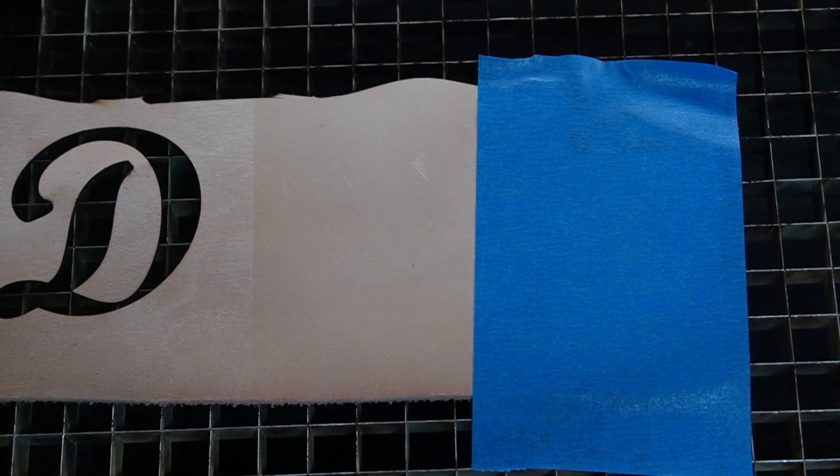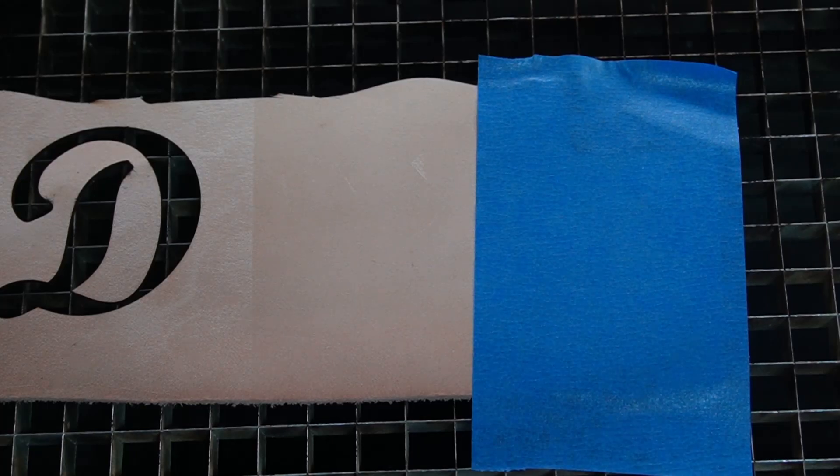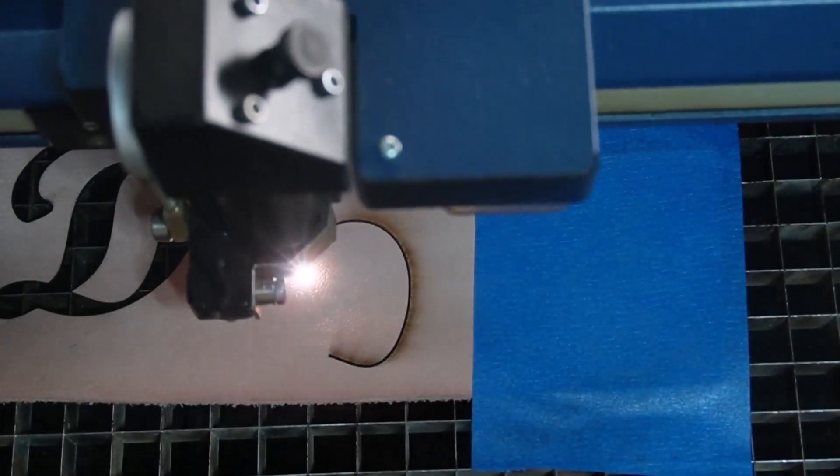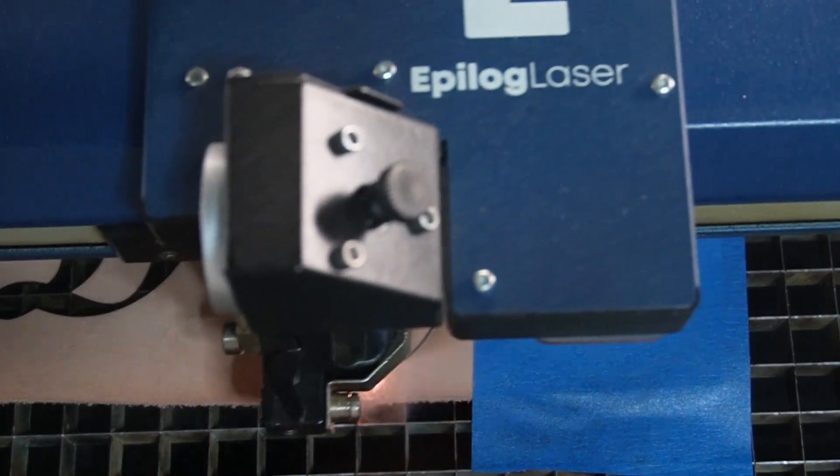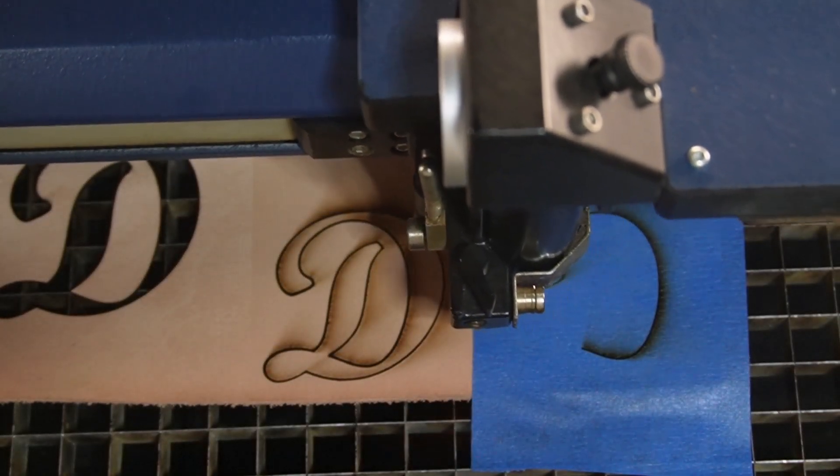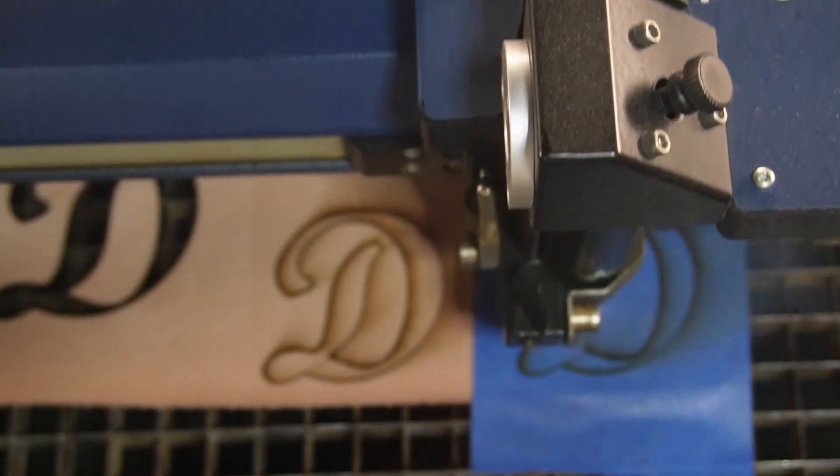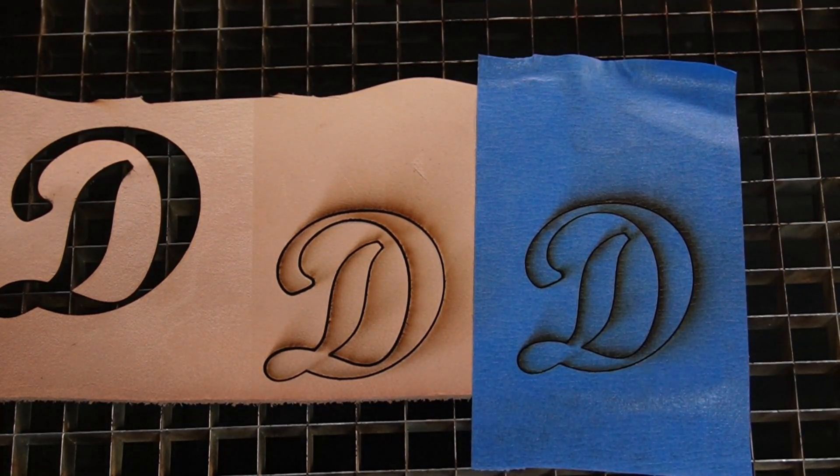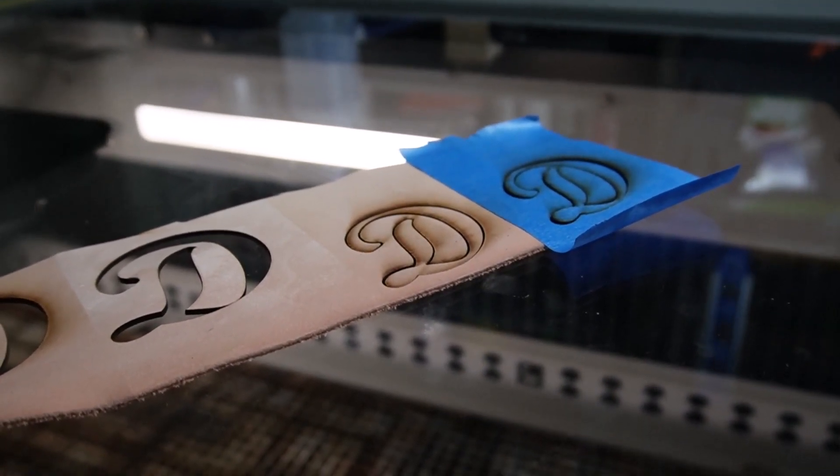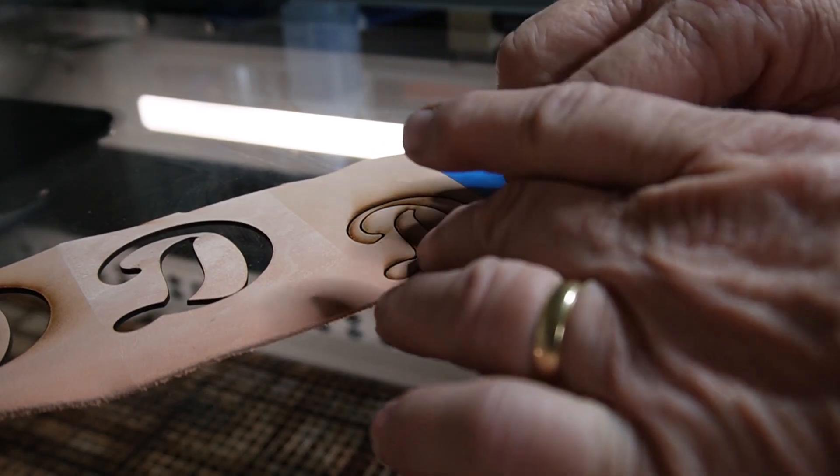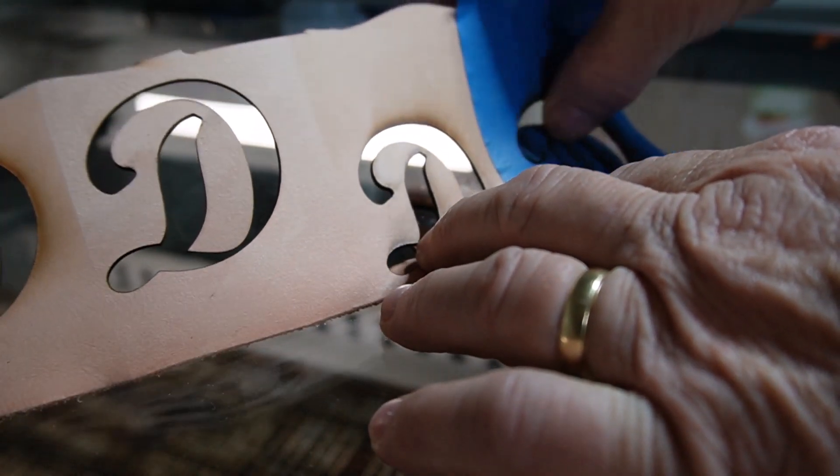Okay now we're going to cut it out and I'll show you what it's going to do. Okay so now we've got the cut. I'm going to pull it apart. First I'll just pick up the leather and you'll see the pieces will fall out.